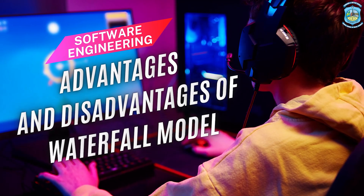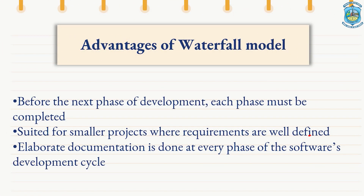Now let us discuss the different advantages and disadvantages of waterfall model. The first advantage is that before the next phase of development begins, the previous stage must be complete. Second, it is suitable for smaller projects where the requirements are well defined — meaning less time will be taken. One more advantage is that elaborate documentation is done at every phase of the software development cycle, meaning people working in the next phase will be aware of all the details.